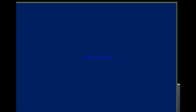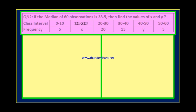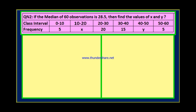Dear children, you see question number 2 now. If the median of 60 observations is 28.5, then find the values of x and y. Here, I have given two columns, the class interval and frequency. The first row stands for class interval, and the second row gives the frequencies.